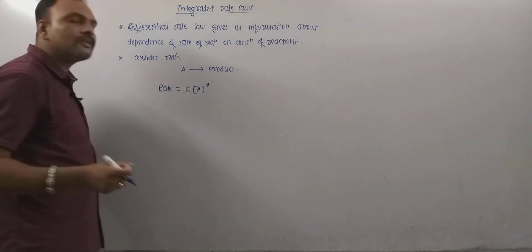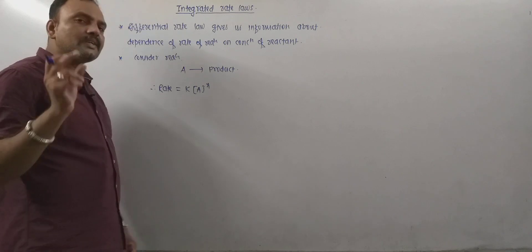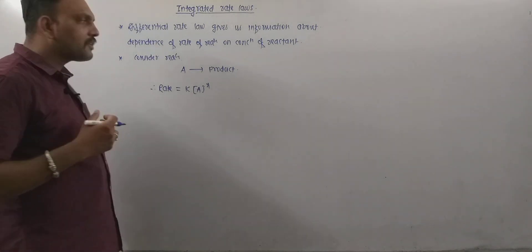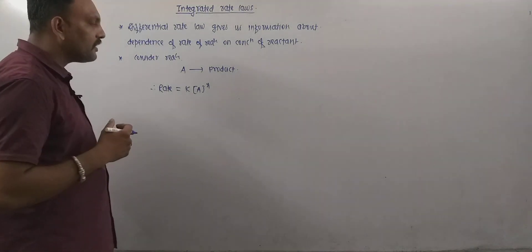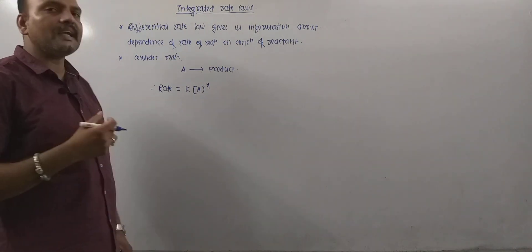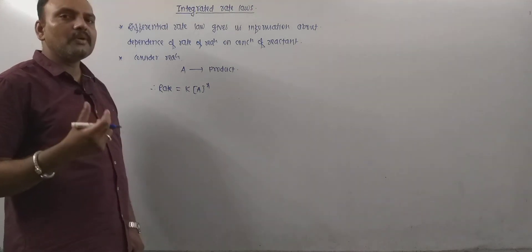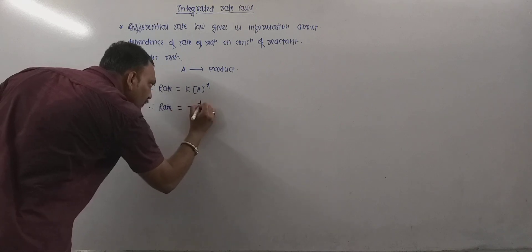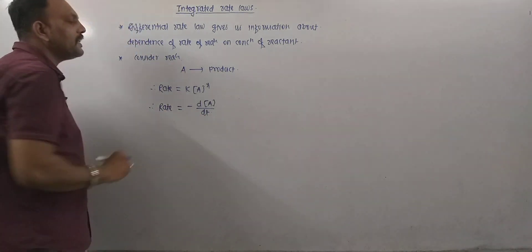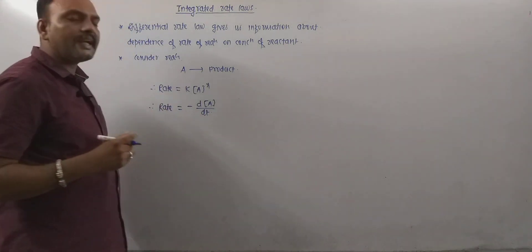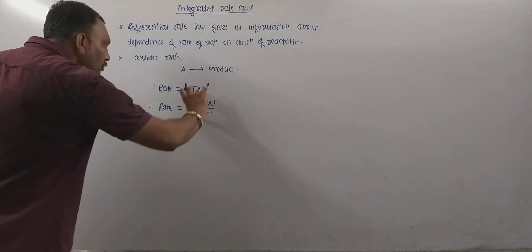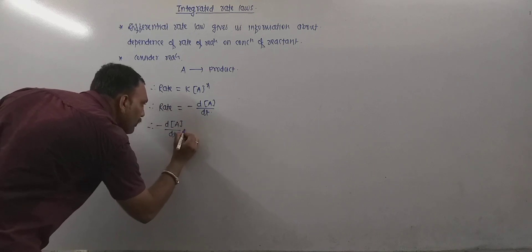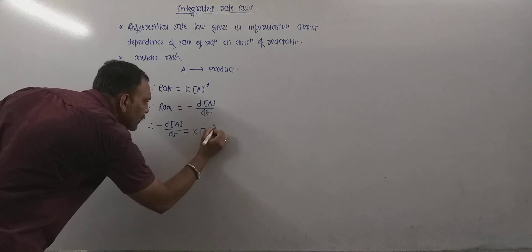We know very well that exponent X is the order with respect to A, and that is experimentally determined. At a particular instant, let d[A] be the amount of A decreased or consumed in unit time dt. Then the rate of reaction can be given as: minus d[A]/dt, where the negative sign indicates that the concentration of A decreases with time.